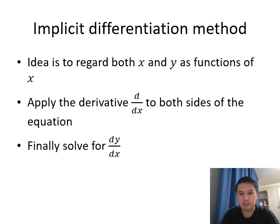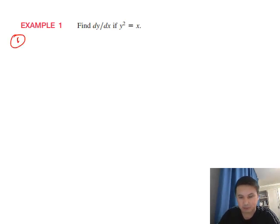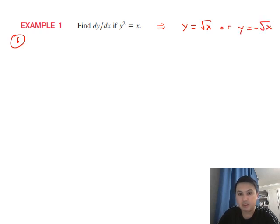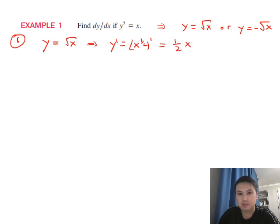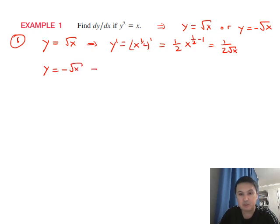Let's work through an example. First, the usual way: find dy/dx where y² = x. This means y = √x or y = -√x. For y = √x = x^(1/2), the derivative by the power rule is (1/2)x^(-1/2) = 1/(2√x). Similarly, when y = -√x, the derivative is -1/(2√x).